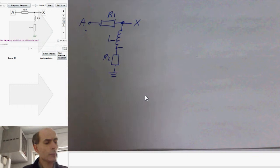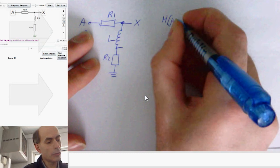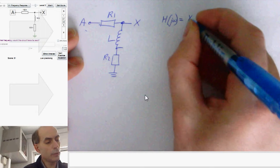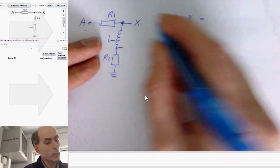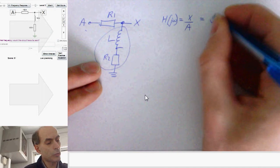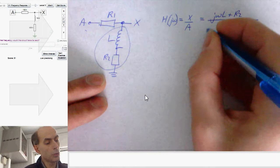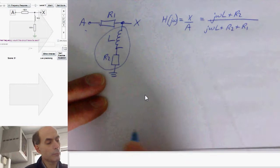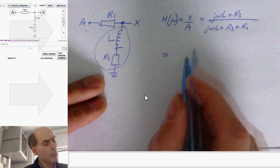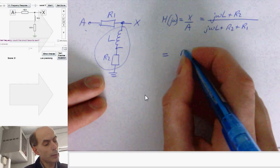We have here a potential divider. The gain, Hj of omega, is the output divided by the input. That's X over A. And standard potential divider, that would be the impedance of this network here, which is just J omega L plus R2 divided by the total impedance, which is J omega L plus R2 plus R1. And we're trying to get that into a standard format.